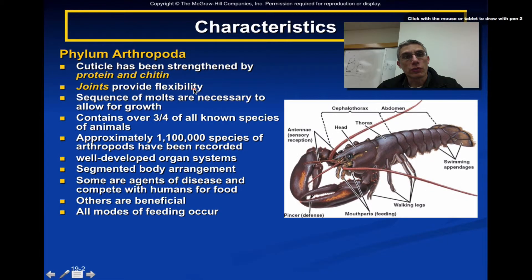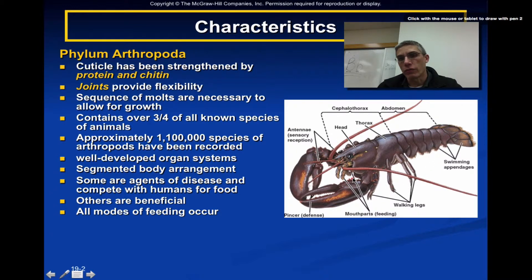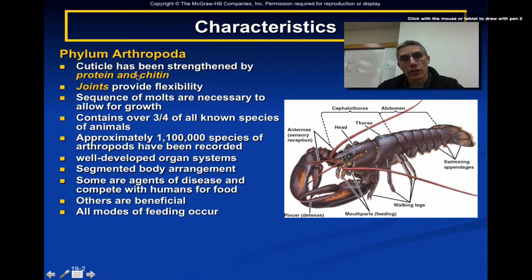The first thing we need to do is look at some characteristics that identify animals belonging to the phylum Arthropoda. One of the first is the exoskeleton. Looking at the lobster or crayfish-type animal on the right, you can see it's covered in a very rigid skeleton on the outside of its body — that's what exoskeleton means. This exoskeleton has a very strong top layer called the cuticle.